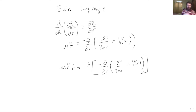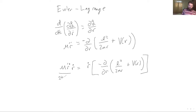So this is μr̈ equals the partial derivative with respect to r of the effective potential, which is L² over 2μr plus V(r). The trick we're going to use is to multiply both sides of this equation by ṙ. I've multiplied both sides by the same thing, so I haven't changed the value of the equation. Now we're going to look at each of these sides separately — this side first, then this side second — and we'll start to see why we're doing this substitution.